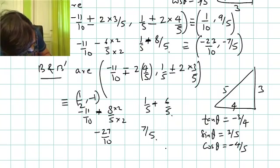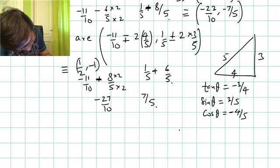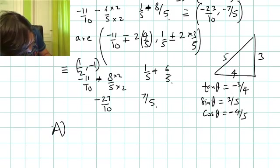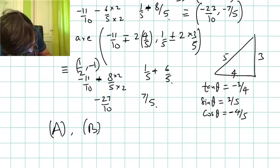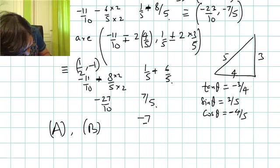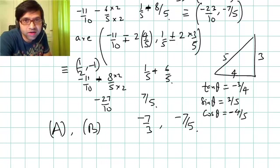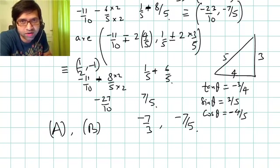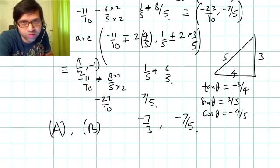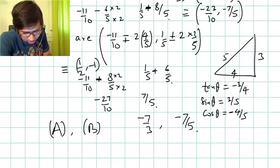Checking against the answer choices, option A matches. Option B will also match, but there is a misprint — it shows -7/3 when it should be -7/5. With that correction, both A and B are correct. So we have found all four points A, A', B, and B', giving four answers in total, with A and B matching after the correction.